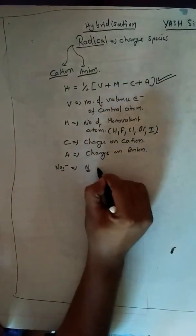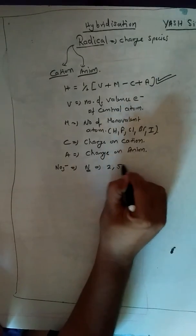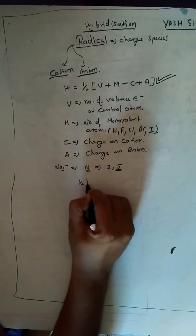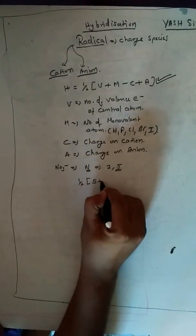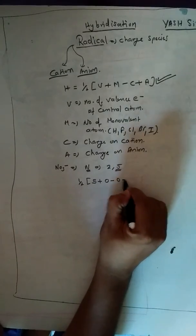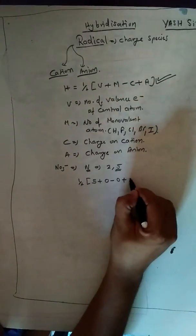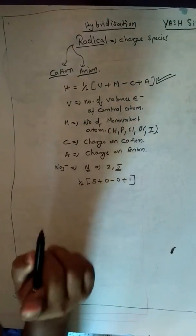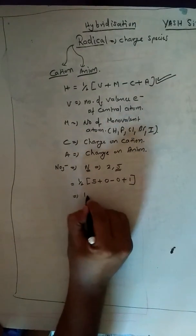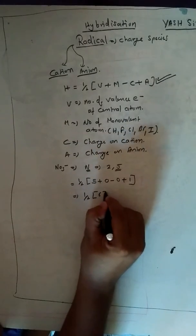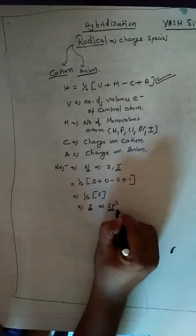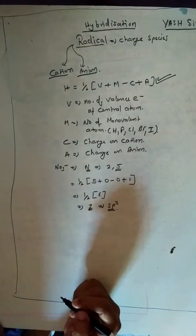So the central atom is nitrogen having electronic configuration 2s2 2p5. So there are total how many valence electrons? Five. So the formula will be 1 by 2, 5 plus there is no monovalent atom so it will be 0, minus 0 since the radical is an anion so it is 1. So the total will be 1 by 2 of 6, so it comes to be 3. So the hybridization will be sp2. I hope this is clear to you.